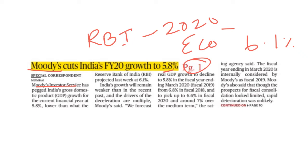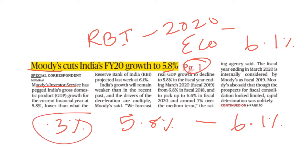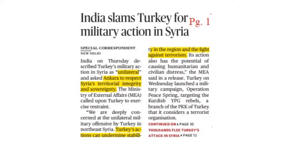Moody's Investor Service forecasts the real GDP to decline to 5.8% in the financial year 2020. There is expected to be a pick-up in the following financial year.